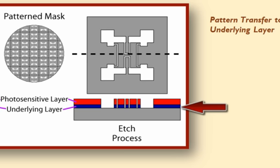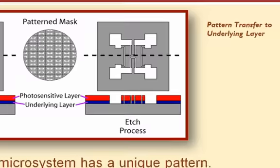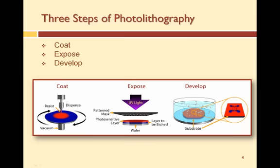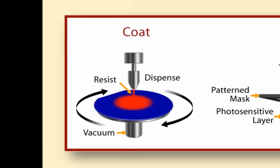After the pattern transfer, the resist is usually stripped or removed. The three primary steps of photolithography are coat, expose, and develop.